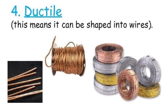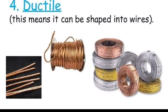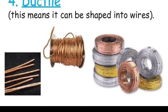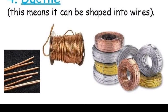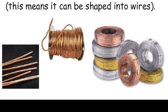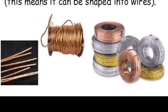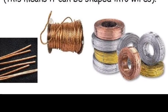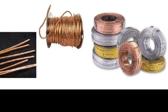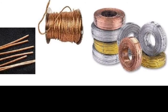Metals are ductile, which means they can be shaped into wires. But non-metals cannot be shaped into wires. In this picture, you can see examples of metals made into wires — there are copper wires, aluminium wires, and brass wires. You can also make wires of silver and gold.